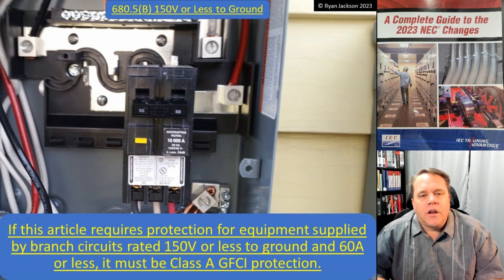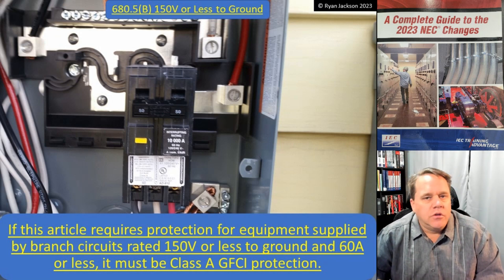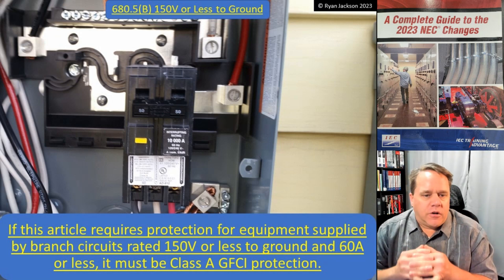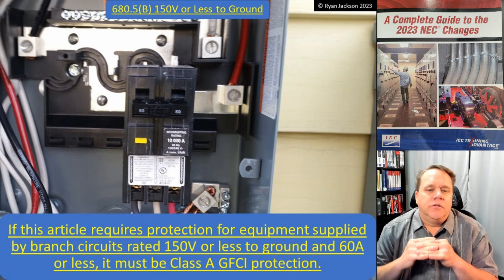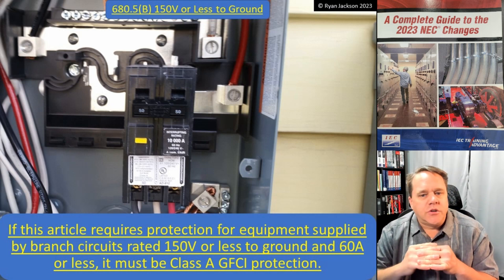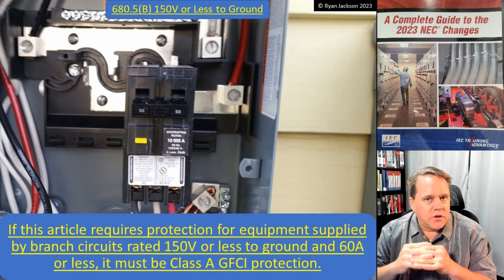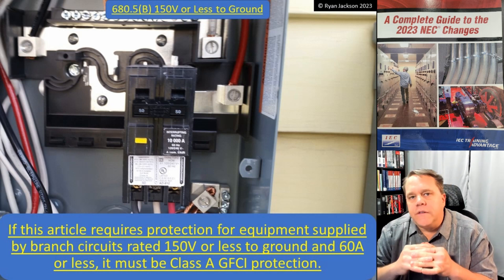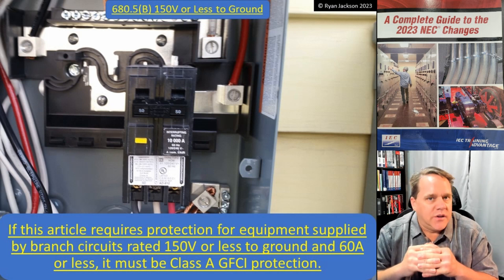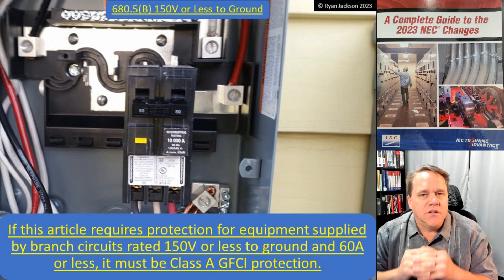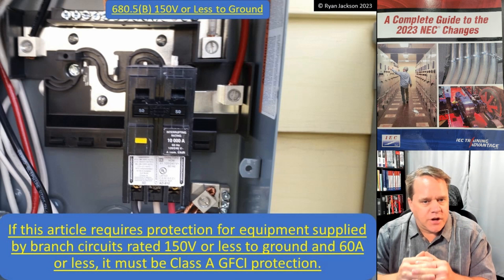680.5B, 150 volts or less to ground: if Article 680 requires protection for equipment supplied by branch circuits rated 150 volts or less to ground and 60 amps or less, then the device must be a Class A GFCI protection device.